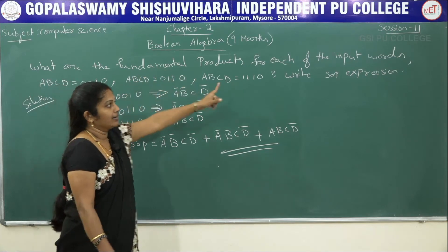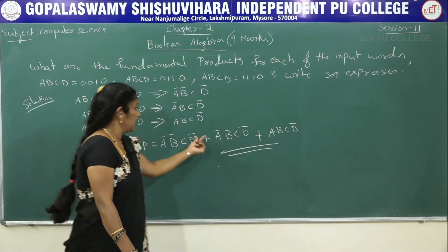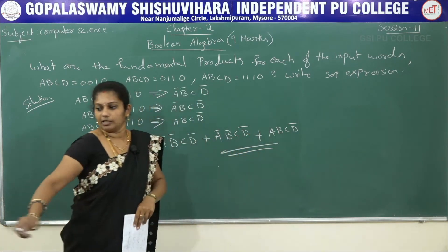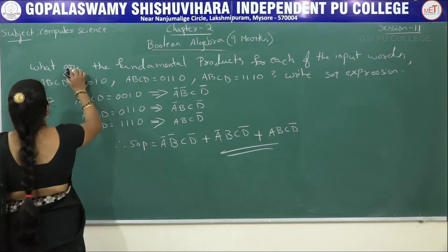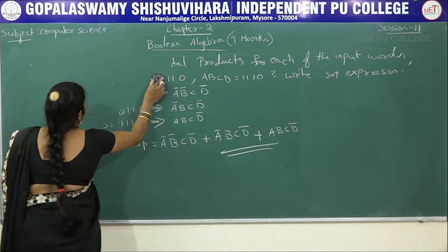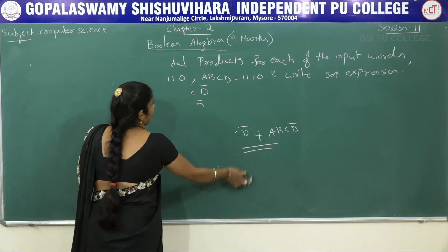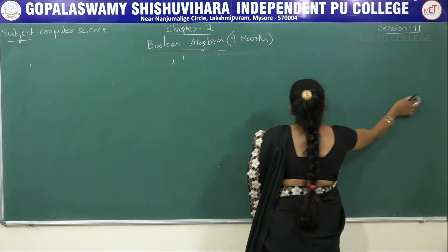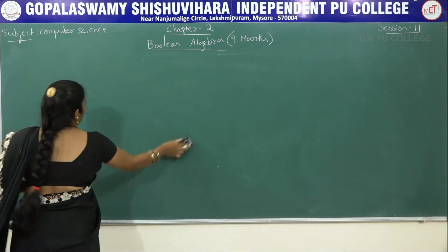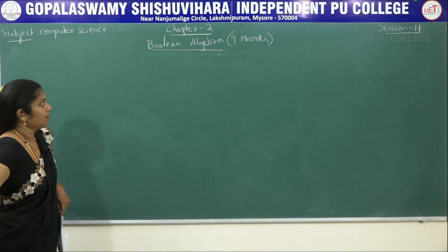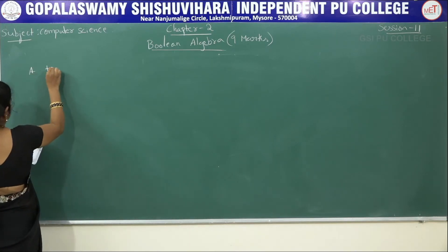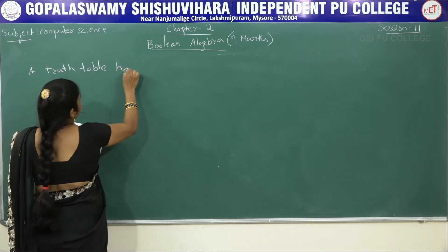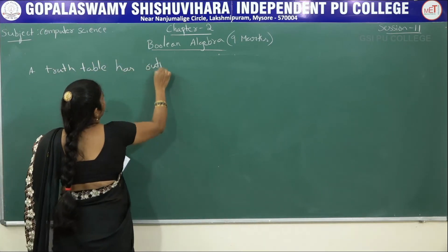This is your sum of product form. The final expression is a sum of product expression. Now the second problem: a truth table has output 1 for each of these inputs — we will write the truth table and then solve. They may give a truth table or an expression. Second problem: a truth table has output 1 for each of the following inputs.